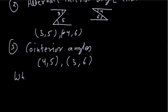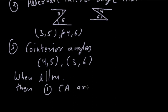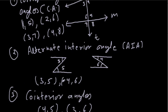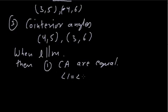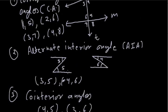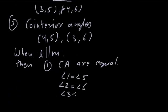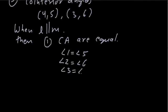When L is parallel to M, the first result is that corresponding angles are equal. That is: angle 1 = angle 5, angle 2 = angle 6, angle 3 = angle 7, and angle 4 = angle 8. Corresponding angles are equal only when the lines are parallel.